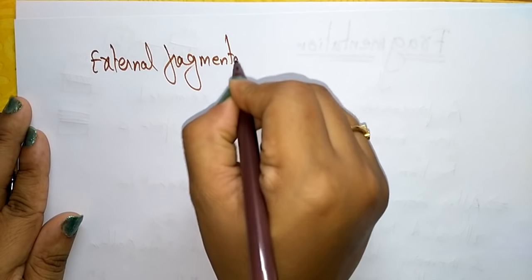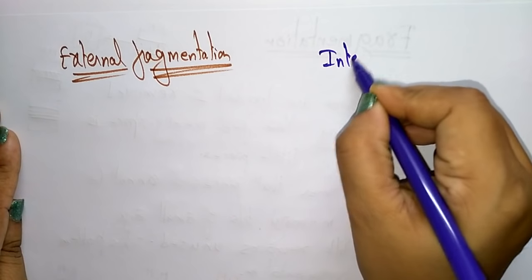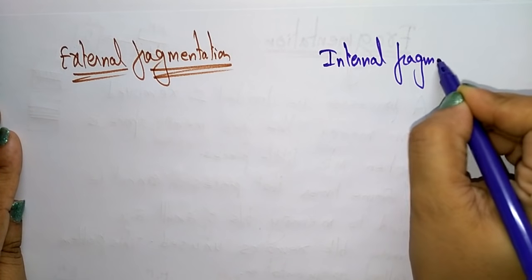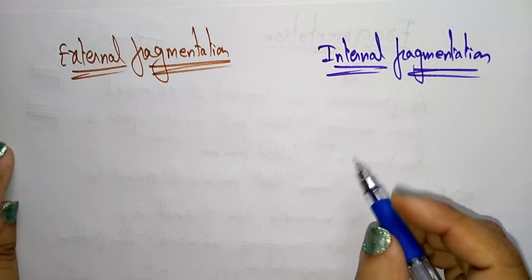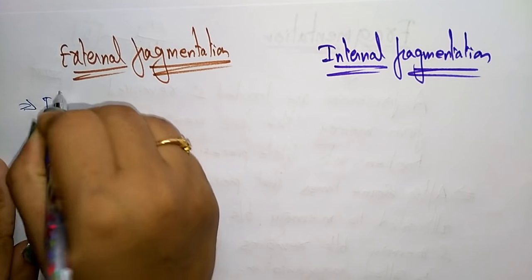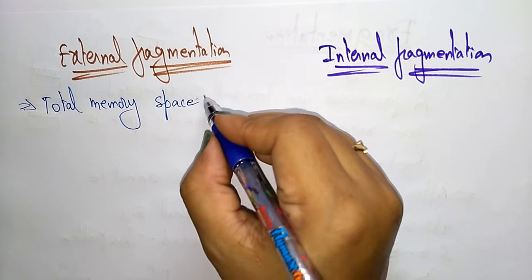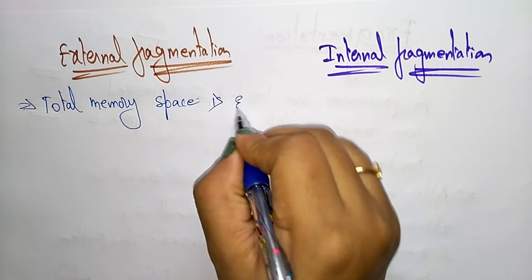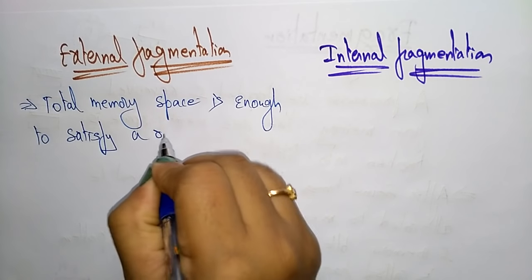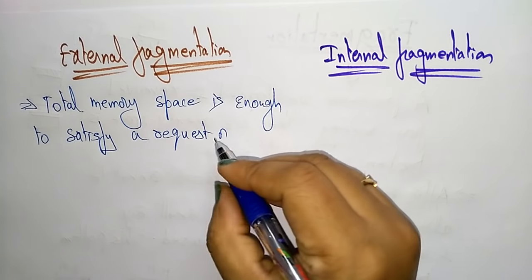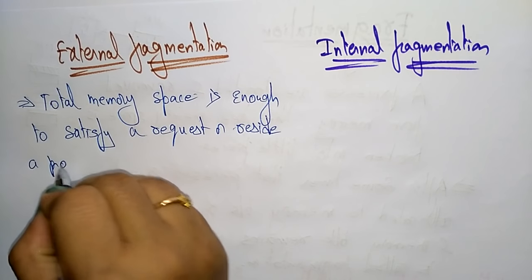Fragmentation is divided into two types: one is external fragmentation and another is internal fragmentation. External fragmentation means the total memory present in main memory — the total memory space — is enough to satisfy a request or reside a process in it.